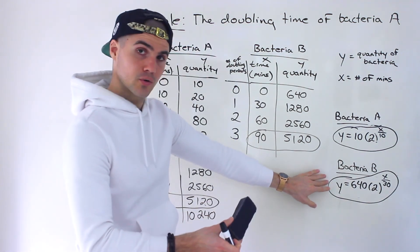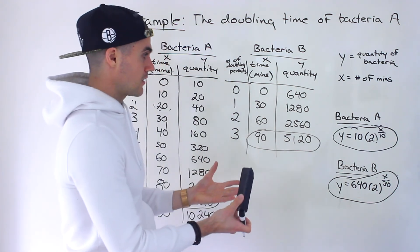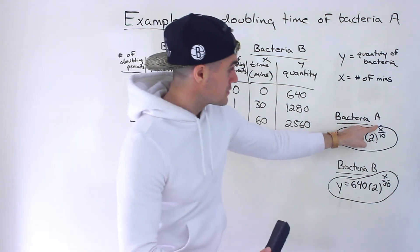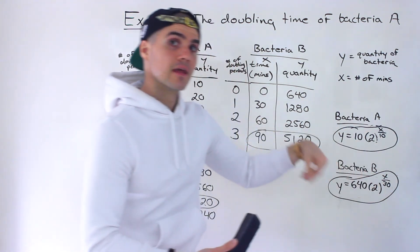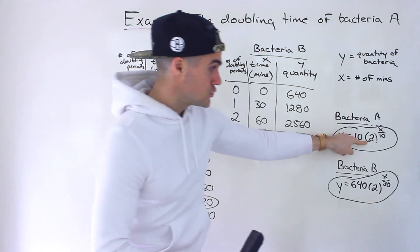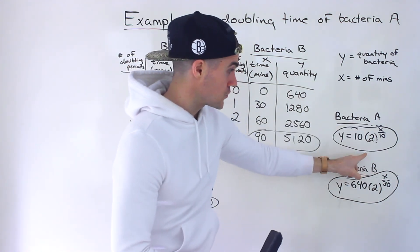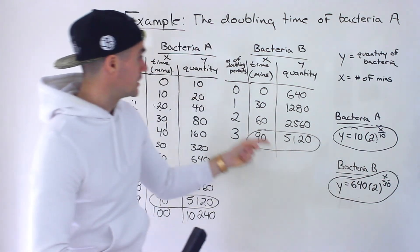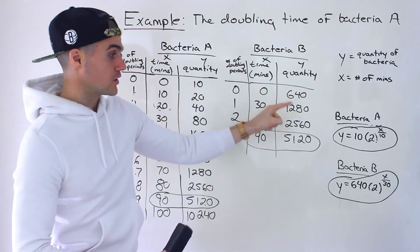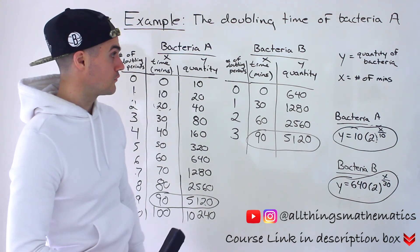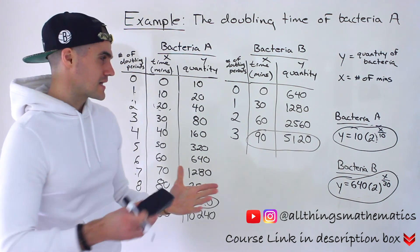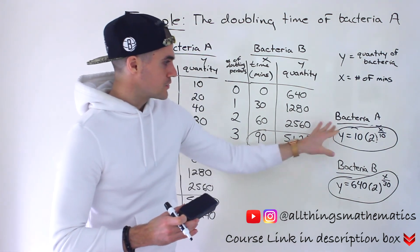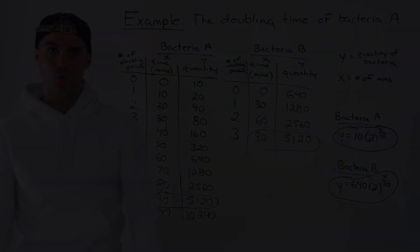Make sure whenever you get your equation, you test it out. You can also plug in 0: 0 ÷ 10 or 0 ÷ 30 gives 0, and 2^0 = 1, so you get back the initial populations of 10 and 640 respectively. Be careful about what X represents. If it's the number of doubling periods, just put X in the exponent. If it's the number of minutes, divide by the doubling time. Hopefully that made sense — fairly intense question, but now you understand the difference between both types of equations.